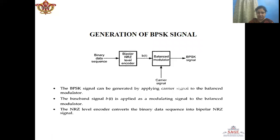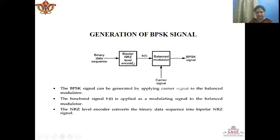Here we can see the generation of the BPSK signal. We have a binary data sequence. First, this binary data sequence is changed into a bipolar NRZ signal B(t) by using an encoder. Then B(t) is combined with the carrier signal using a balanced modulator, and we get the BPSK signal.